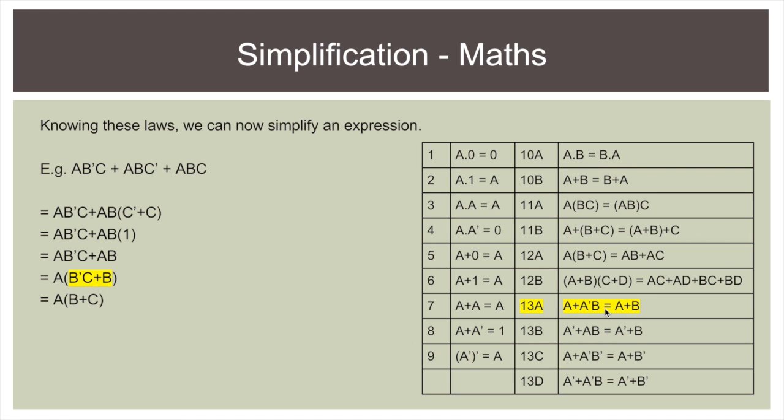And then we've got B not C plus B. So this is a weird law over here. A plus the notted version of A and something equals A plus B. So B plus the notted version of C plus something else equals B plus C. And then we just expand that using this law again. And we've got A B plus A C.